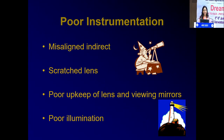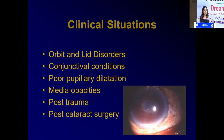Poor instrumentation includes a misaligned indirect, a scratched lens — a very common issue — poor upkeep of the lens and viewing mirrors, and poor illumination. Clinical situations include orbital and lid disorders, conjunctival conditions, poor pupillary dilatation, media opacities, post-trauma, and post-cataract surgery. Prominent orbital bones or deep-set eyes make it difficult to perform indirect. Small palpebral fissures, conjunctival conditions like chemosis or symblepharon, are difficult to depress.